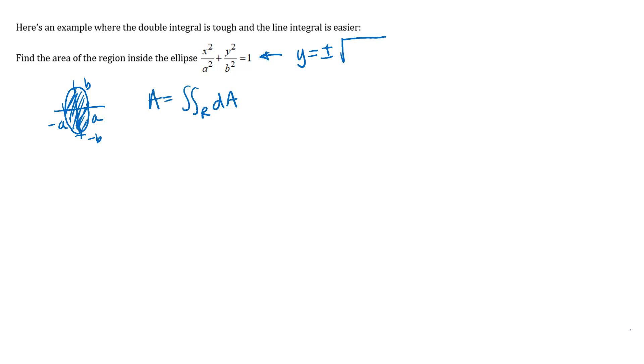And the first integration would be fairly straightforward. It would be the second integration that would be difficult because you'd end up having to integrate these equations of this curve. And generally integrating inside radicals can be difficult. So this is one where the double integral is doable, but difficult. But the line integral is actually easier.